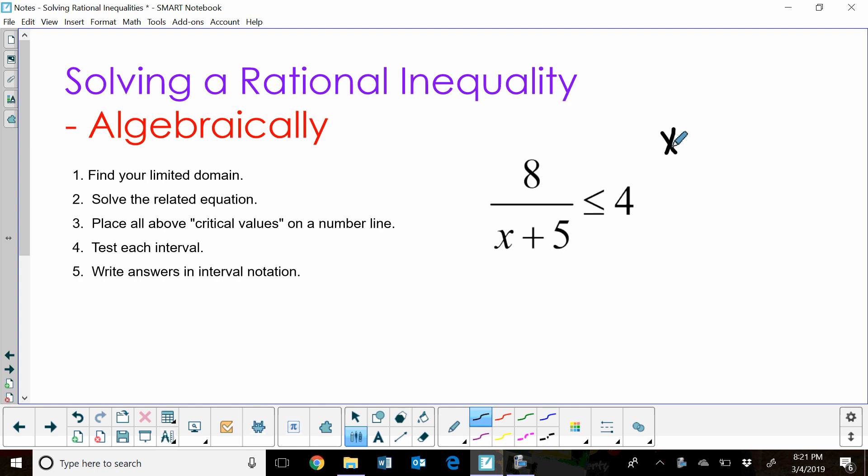We know that a denominator cannot equal zero. So let's set the denominator equal to zero and solve. If we solve for x, x is negative 5. Well, that becomes our limited domain. x cannot be negative 5 because that forces a zero in the denominator. So that's our first step, finding our limited domain.